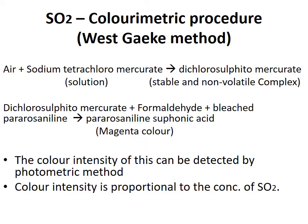The first method for SO₂ analysis is the colorimetric procedure or West-Geek method. Sulfur dioxide from a measured quantity of air is absorbed in a solution of sodium tetrachloromercurate to form a stable, non-volatile dichlorosulfatomercurate complex. This is then reacted with formaldehyde and bleached para-rosaniline to yield a magenta-colored para-rosaniline sulfonic acid product. The color intensity, detected by photometric method, is proportional to the concentration of sulfur dioxide.